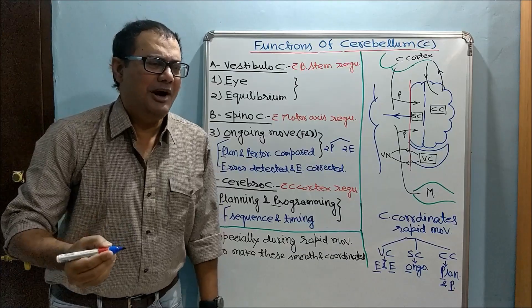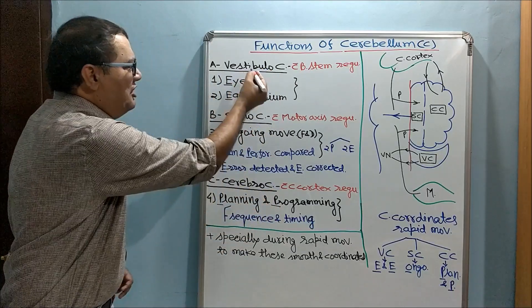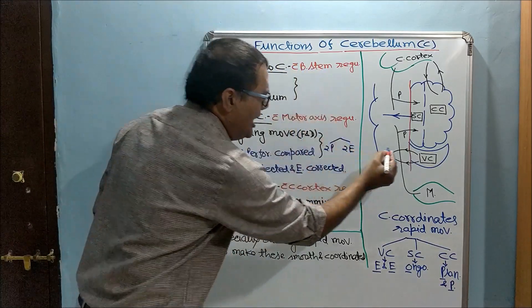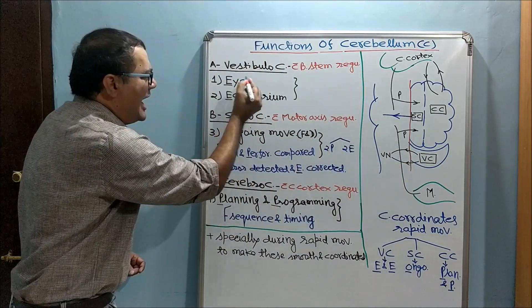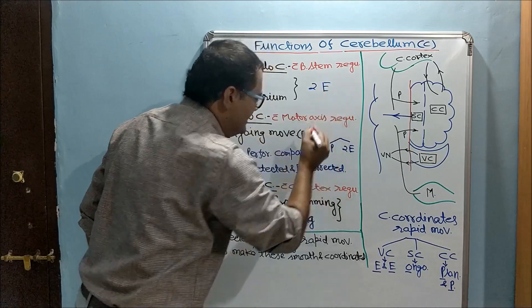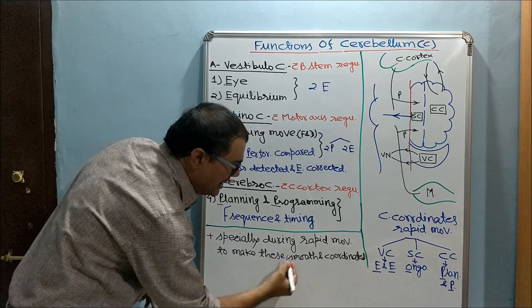Functional divisions of cerebellum are vestibulocerebellum, spinocerebellum, and cerebrocerebellum. First, functions of vestibulocerebellum: vestibulocerebellum works with brain stem, especially vestibular nucleus, and regulates eye movements and equilibrium. We can remember by two E's. During rapid motor activities, it makes the activities smooth and coordinated. In fact, these two lines we will add in all the four functions.